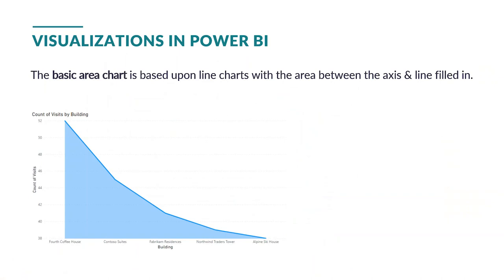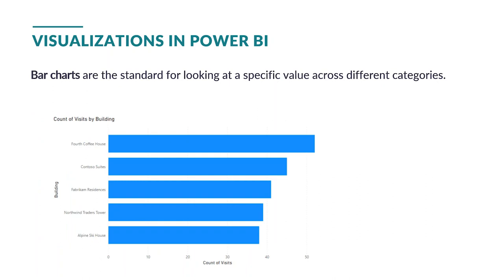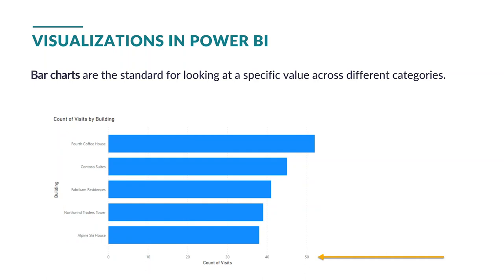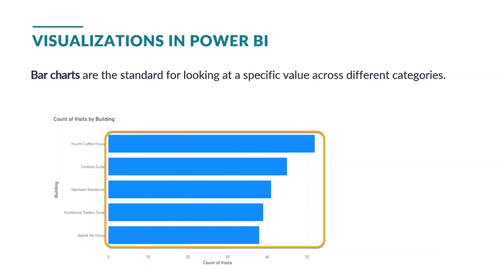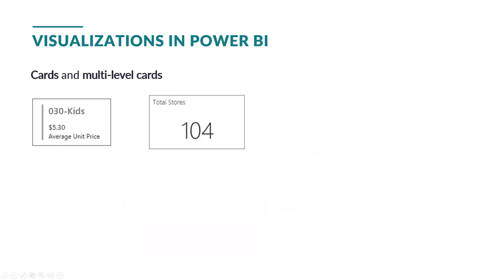Our first option is a basic area chart. A basic area chart is based on the line chart, and it is the area between the axis and the line filled in. We also have about two or three types of bar charts. Bar charts are a standard for looking at specific values across different categories. Power BI also offers the option to put in card and multi-card visuals. These are very useful for when you want to represent a single figure that summarizes your data. For example, you can have an average, a variance, a range, a minimum, or a maximum — any type of summary that is representative of your data.